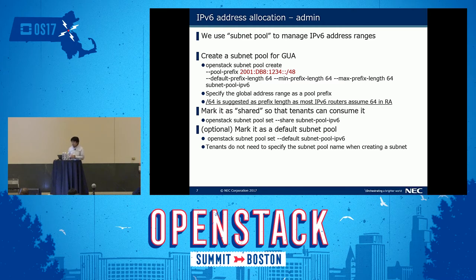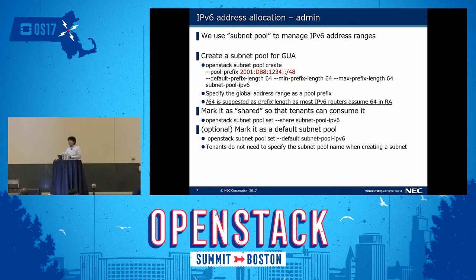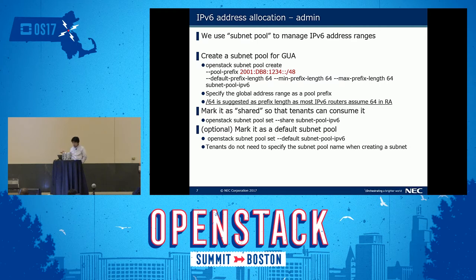First, create a subnet pool from global unique addresses. I specify the prefix length to /64. This is because currently, SLAAC or DHCPv6 stateless mode — /64 prefix is actually the only option to work with router advertisement. Then mark it as shared so that tenants can consume it. And optionally, mark it as the default subnet pool. It is useful because tenants do not need to specify a subnet pool name when creating a subnet.